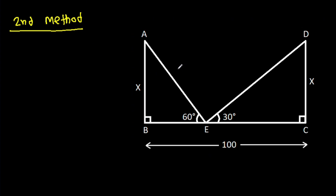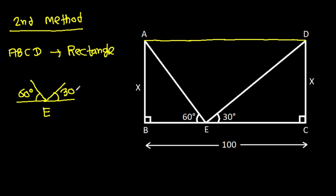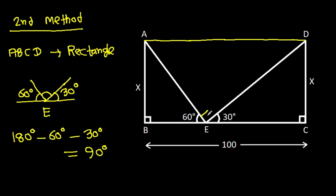If we join AD, then ABCD will be a rectangle. And at point E, this angle is 60 degrees and this angle is 30 degrees. So this angle will be 180 degrees minus 60 degrees minus 30 degrees, that will be 90 degrees. So this angle at E will be 90 degrees. And this angle will be 90 degrees minus 60 degrees, that will be 30 degrees.